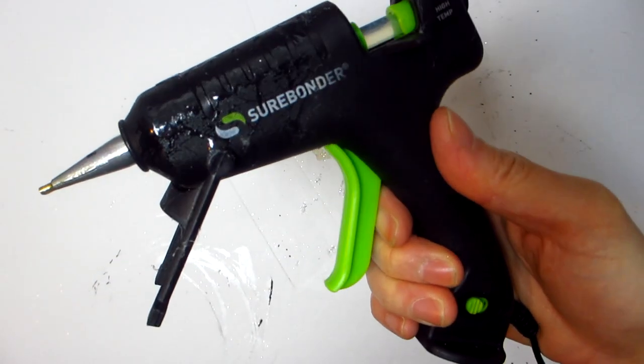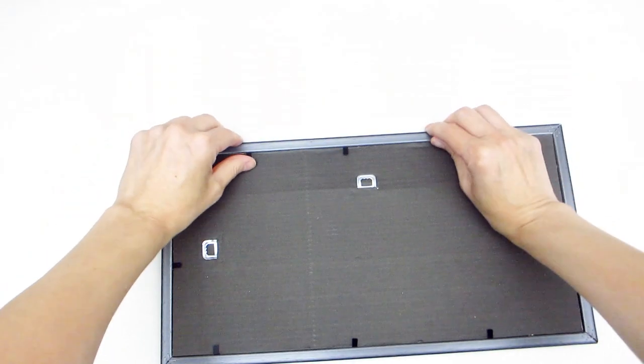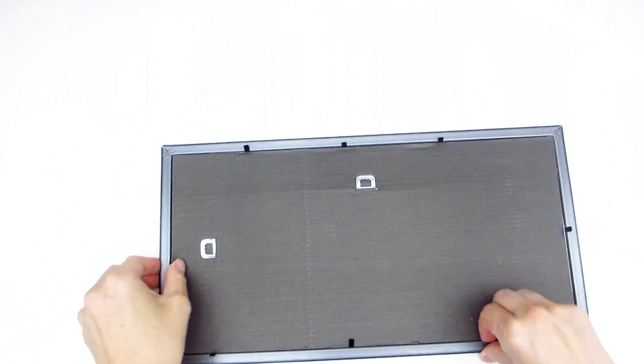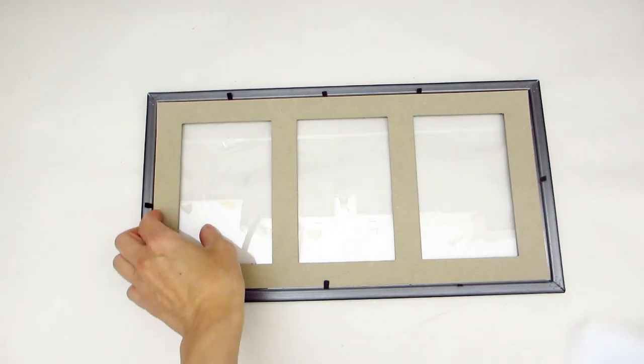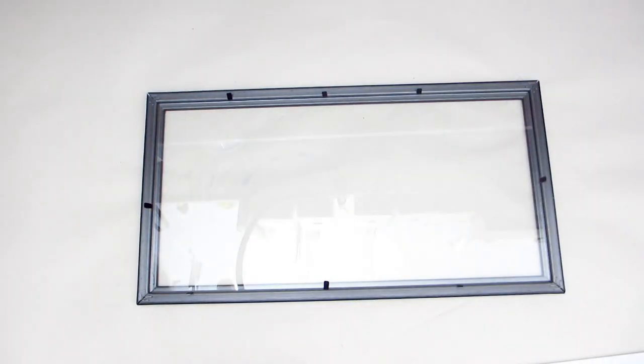To begin, we will need to disassemble the picture frame and remove the cardboard backing and paper insert. Take the paper insert and use it as a template to measure out and cut out a section of the silver gift bag.